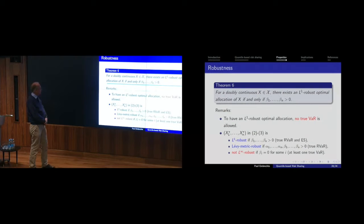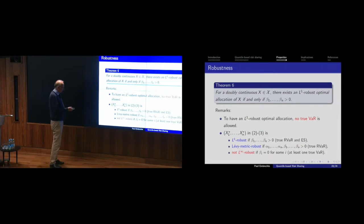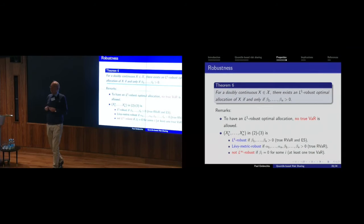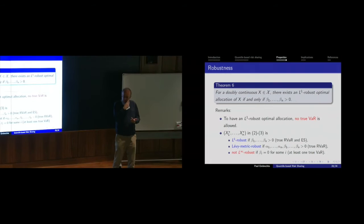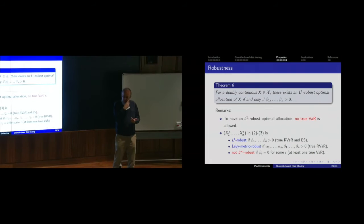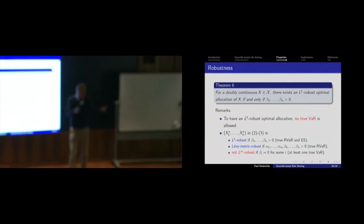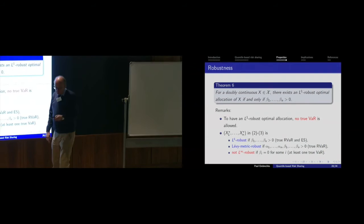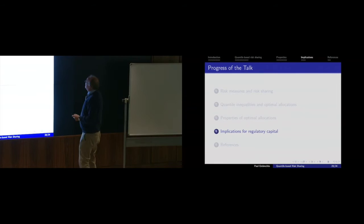Many results are intuitively true — VaR being blind in the tail and all that — but here is a mathematical theorem. The proof is non-trivial; it's careful crafting that needs several pages. We can also do this for the Lévy metric and L-infinity, and the results hold for many more topologies, but we stick to L1 because we want Expected Shortfall there. So we now have three results: optimality, co-monotonicity, and robustness.